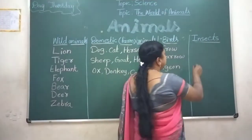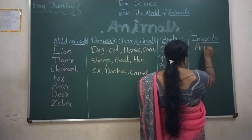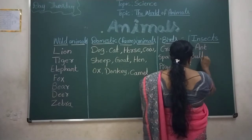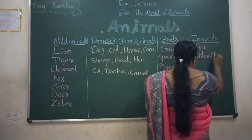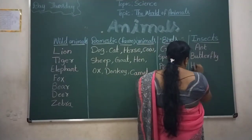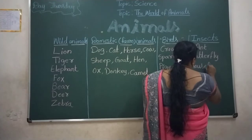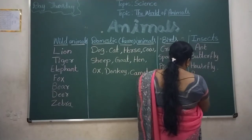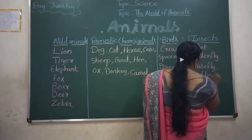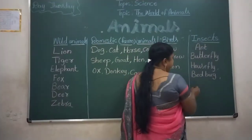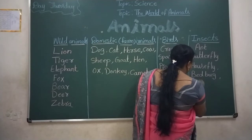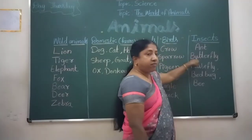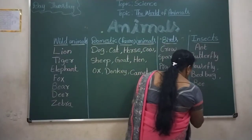Insects names: ant, butterfly, housefly, and others. Ant, butterfly, housefly — these are insects.